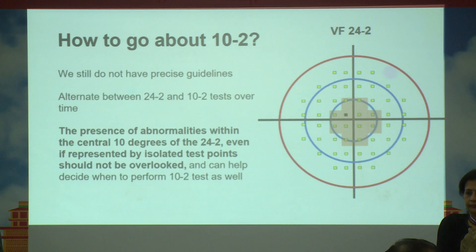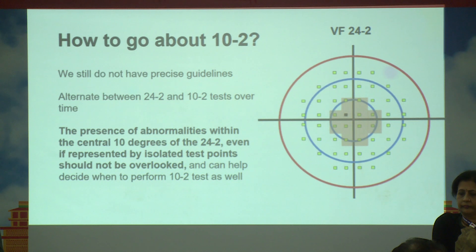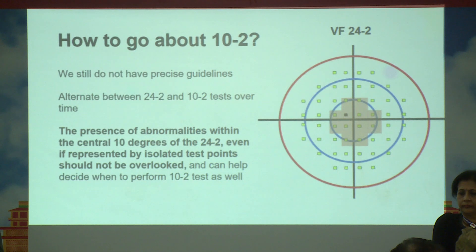The definition, severity, and functional implications of glaucoma all change with these findings. Practically, alternate between 24-2 and 10-2, since it is very difficult to order both in a single visit. At a six-monthly visit, the patient can do a 24-2 one time and a 10-2 the next. Another important point: if you see a single black point in your 24-2, that is an indicator to go ahead and do a 10-2, because only 12 points are checked in the central 10 degrees and 10-2 gives 68 points with much more information.